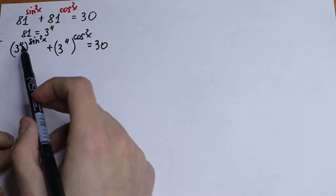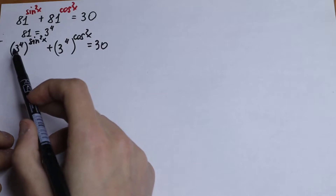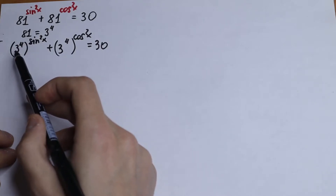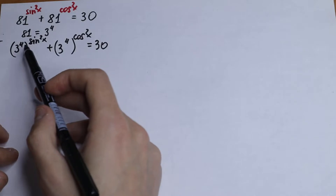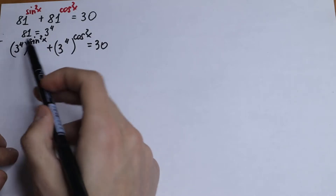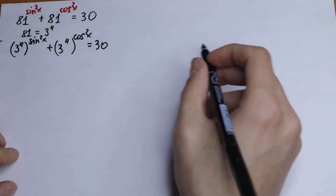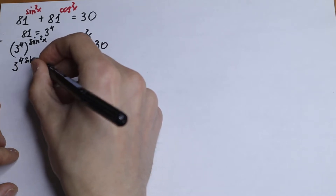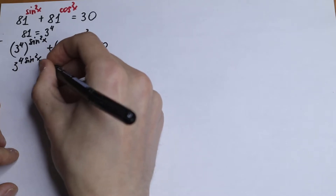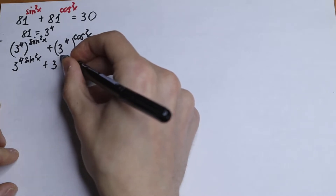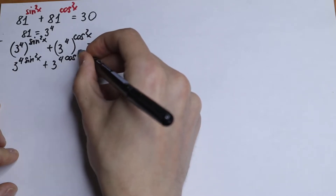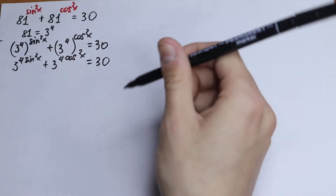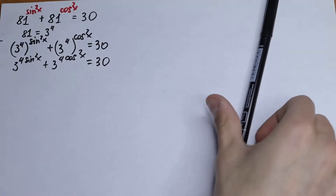What are we going to do next? We have a situation like: a to the power x, raised to the power b. We know this equals a to the power x times b — we just multiply our exponents. So we will have 3 to the power 4sin²x, plus 3 to the power 4cos²x, equal to 30. Just using an exponent rule.